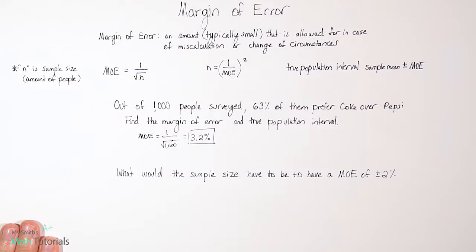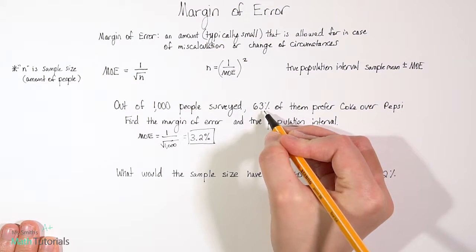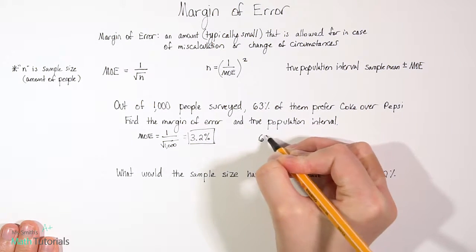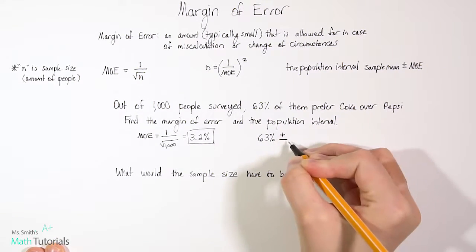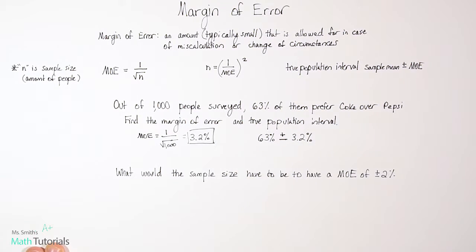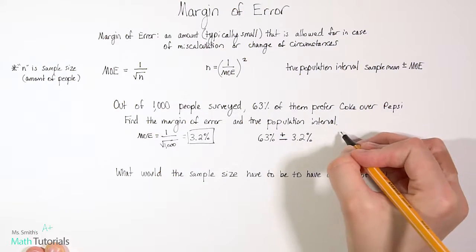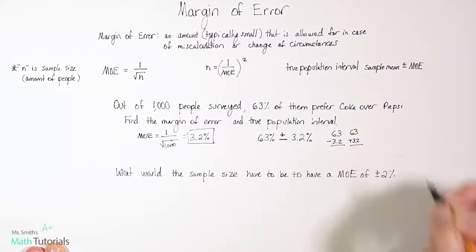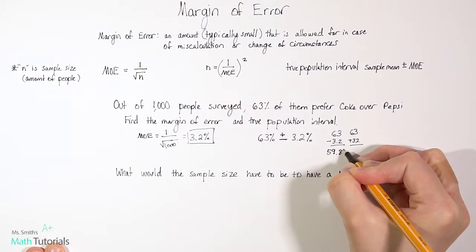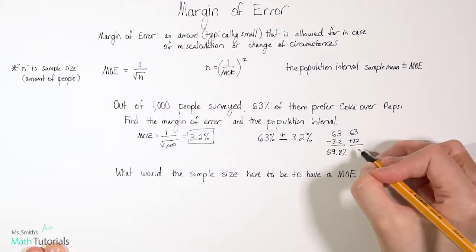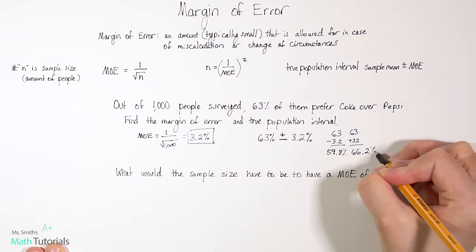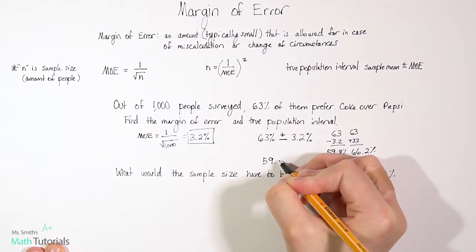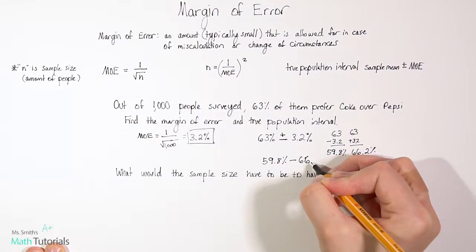But then they also ask for the true population interval. So to find that, we would take our percent of people that prefer Coke, so 63%, and we're going to add and subtract to it the margin of error of 3.2%. So we want to actually figure out what is the math there. What is 63 minus 3.2? What is 63 plus 3.2? So we can do that over on the side. So 63 minus 3.2 and 63 plus 3.2. So 63 minus 3.2 gives us 59.8%. And 63 plus 3.2 would give us 66.2. So our true population interval would be 59.8% to 66.2%.